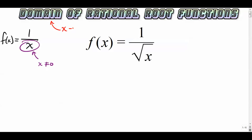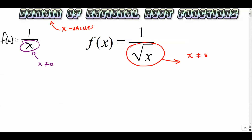When we talk about domain, we're talking about the set of all x values that are valid in the function. The rule here is when you have a rational root function, we're focusing on the denominator. Not only can it not be zero, but if it's a square root, the denominator cannot be negative either. So we're basically looking for all the positive values of x — that would be your domain.